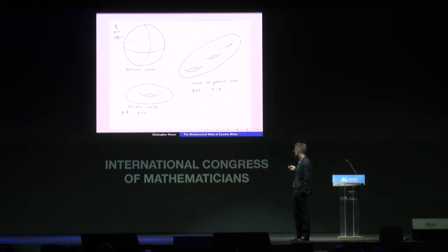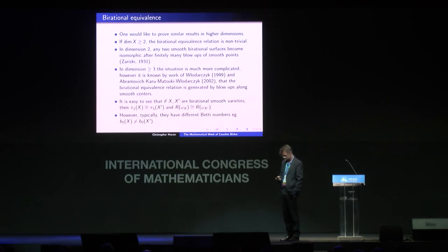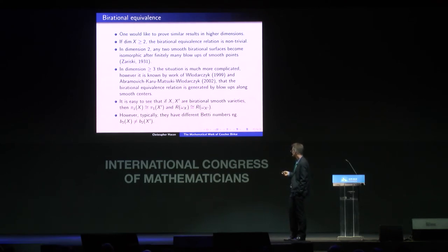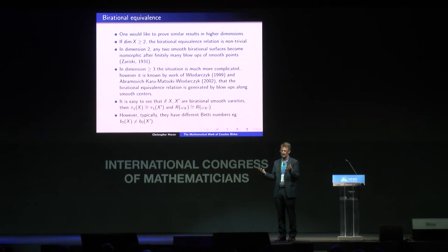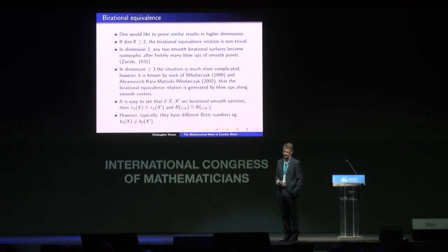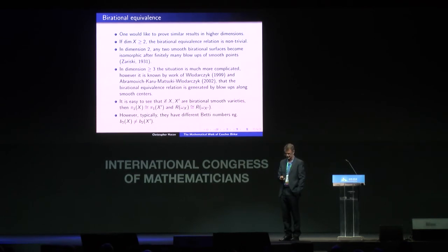The story is mostly about generalizing the features of Riemann surfaces to higher dimensions. Already in dimension two, an interesting thing happens because the birational equivalence relation is no longer trivial. Any two smooth birational surfaces can be connected by a finite sequence of blow-ups of smooth points — if you have two birational surfaces and blow up finitely many points, you get the same surface. In dimension three and higher, it's more complicated because you may have to blow up interesting higher-dimensional sub-varieties, not just points.